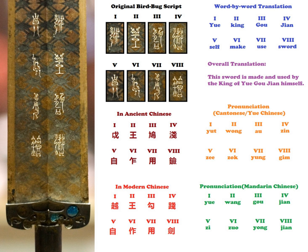Examples of worm seal script can be seen on antique bronze weapons, containers, jades, and seals — mainly the bronze seals of the Han dynasty — and constructional or decorative parts like tiles. The characters on the famous Spear of Fucai are a good example of this category of seal script. See also: Bronze inscriptions, Seal script, Large seal script, Small seal script, Seal East Asia.